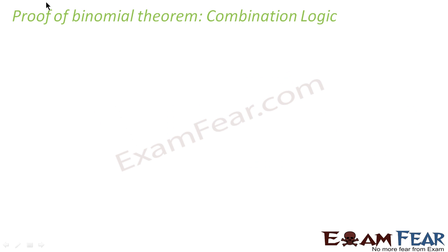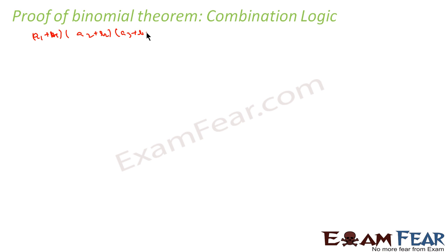So here we'll try to prove the same using combination logic. What I'll do is, I'll try to take the expression (a1 + b1)(a2 + b2)(a3 + b3) and first try to find the multiplication of this. So if I multiply these two, let me first take the product of this.